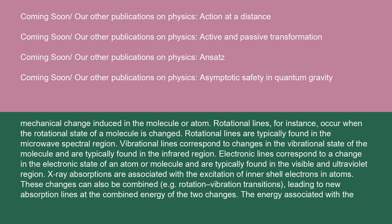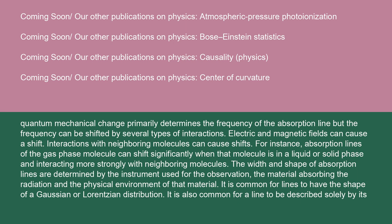The energy associated with the quantum mechanical change primarily determines the frequency of the absorption line, but the frequency can be shifted by several types of interactions. Electric and magnetic fields can cause a shift. Interactions with neighboring molecules can cause shifts. For instance, absorption lines of the gas phase molecule can shift significantly when that molecule is in a liquid or solid phase and interacting more strongly with neighboring molecules. The width and shape of absorption lines are determined by the instrument used for the observation, the material absorbing the radiation, and the physical environment of that material.